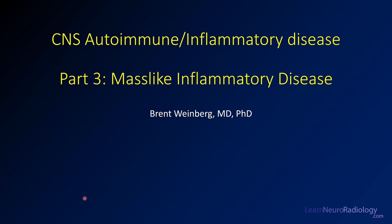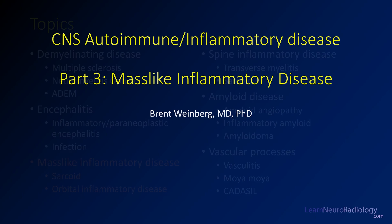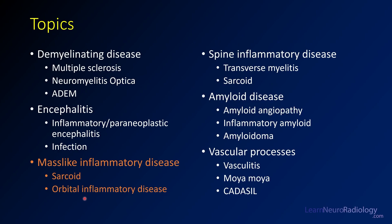Welcome back to Learn Newer Radiology. We're going to continue this lecture about autoimmune and inflammatory disease, and today we're going to talk about mass-like inflammatory diseases. There's not really a great name for these diseases, but these are the ones more likely to have mass-like components and to resemble tumors. The two main diseases you think about are sarcoidosis and orbital inflammatory disease.